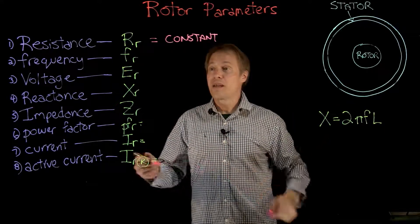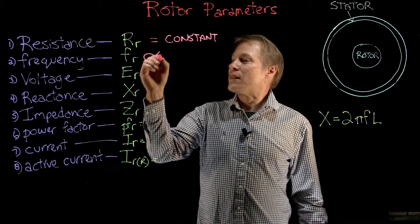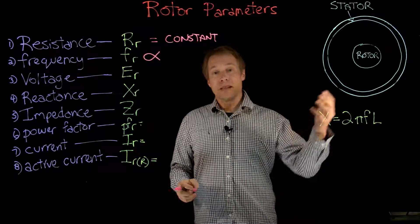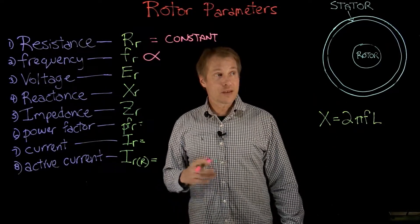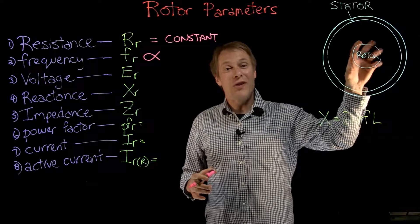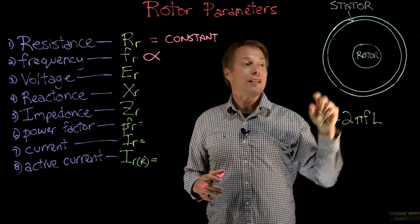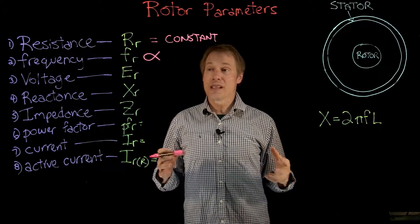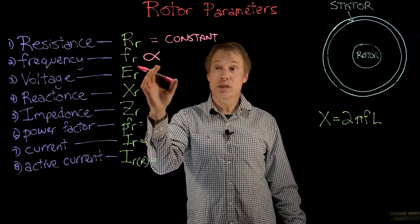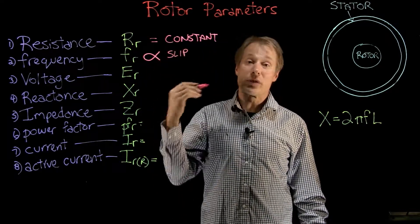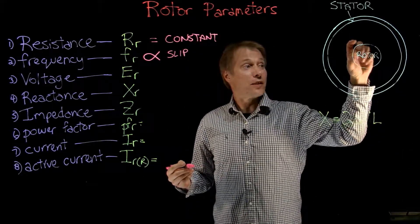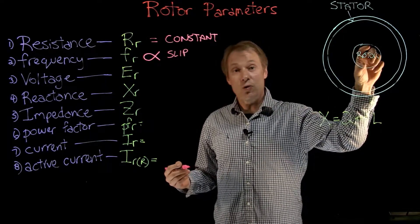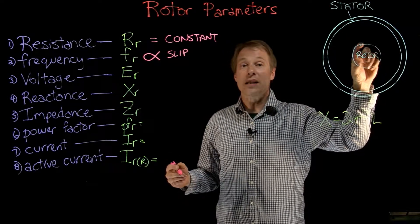So frequency is inversely proportional to rotor speed — as the rotor speeds up, the frequency induced into the rotor goes down. Another way of looking at it: frequency is proportional to slip. At blocked rotor condition, the motor takes on the full frequency, which makes sense — the frequency is proportional to the slip of the motor. As slip speed is at its highest, frequency is also at its highest; as slip approaches zero, frequency approaches zero.